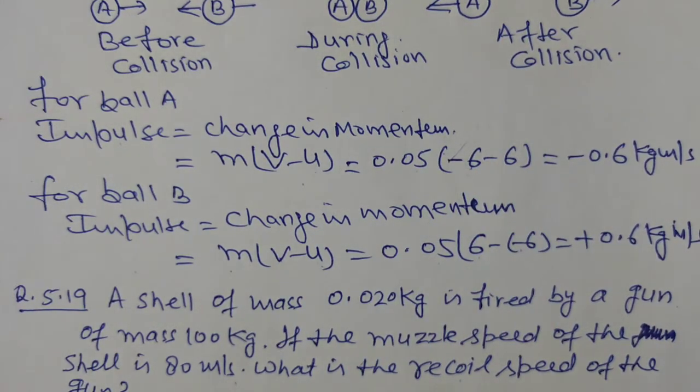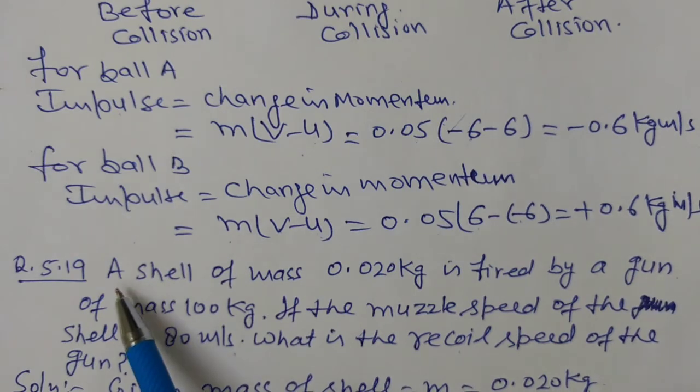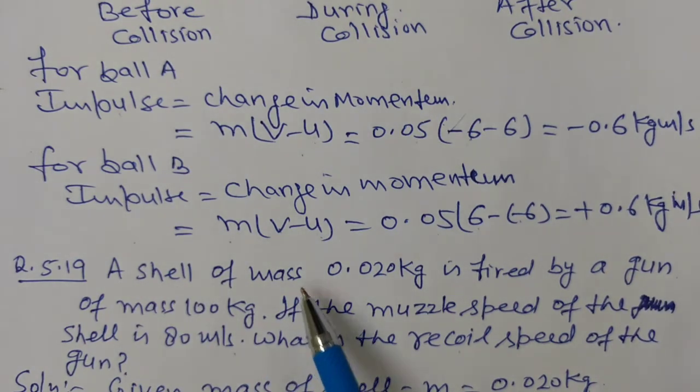Now question number 5.19. According to this question, a shell of mass 0.02 kg is fired by a gun of mass 100 kg. If the muzzle speed of the shell is 80 meter per second, then what is the recoil speed of the gun?